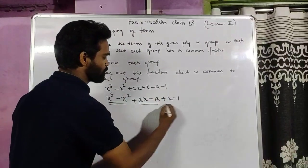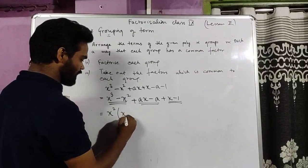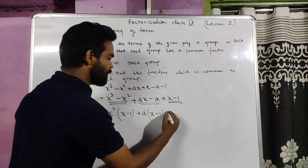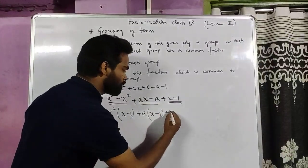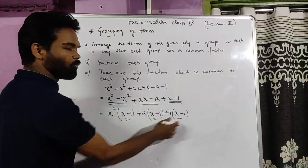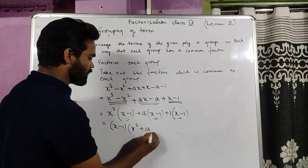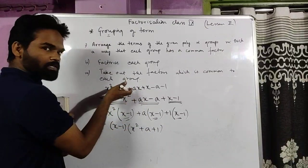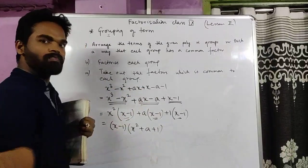Now see how this grouping helps us. x² is common from the first two: x²(x minus 1). Then a is common from the next two: a(x minus 1). And from the last two, 1 is common: 1(x minus 1). In all three groups, (x minus 1) is common. Taking (x minus 1) common, what is left? x² plus a plus 1. So this is factorized as (x minus 1)(x² + a + 1). These two are the factors, meaning dividing by (x minus 1) leaves no remainder, and dividing by (x² + a + 1) also leaves no remainder.